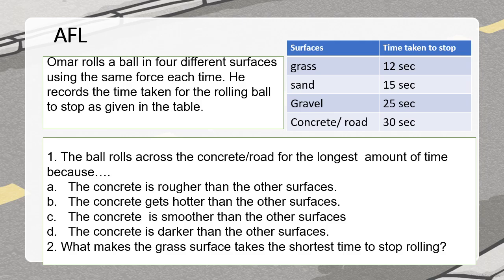Now Omer is rolling a ball on four different surfaces, as you can see in this given table. The time taken for rolling the ball is also given. The question is: the ball rolls across the concrete or road for the longest amount of time — why is it taking the longest amount of time for the ball to stop rolling?